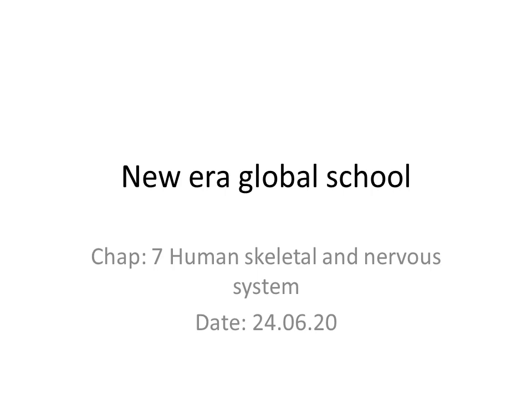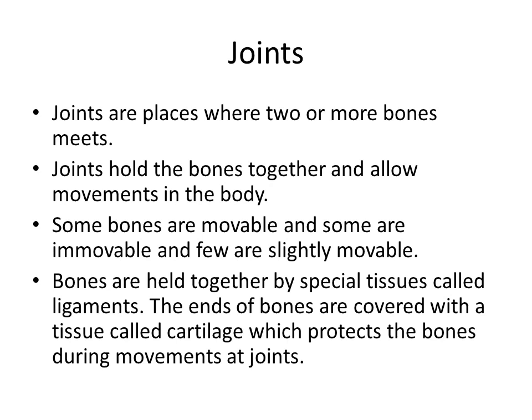Good morning students, welcome to today's section — Chapter 7: Human Skeletal and Nervous System. Today we are going to discuss about joints. A joint is where two or more bones meet together. Yesterday we learned about our limbs.